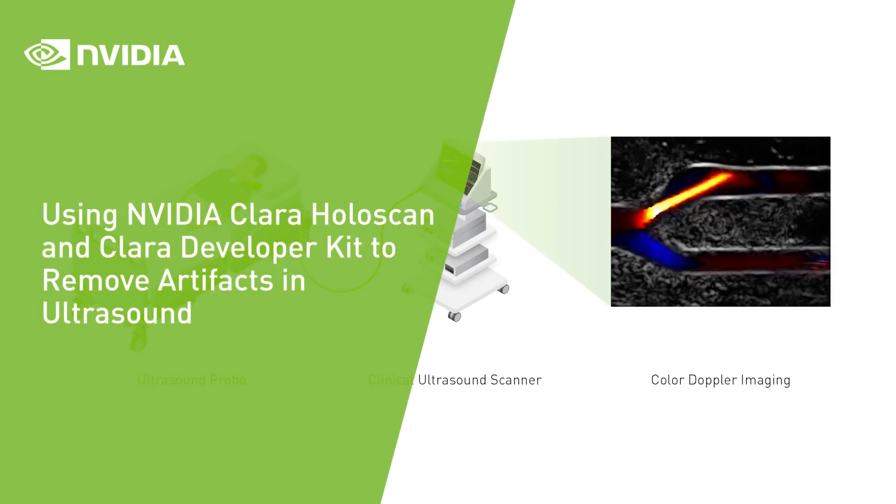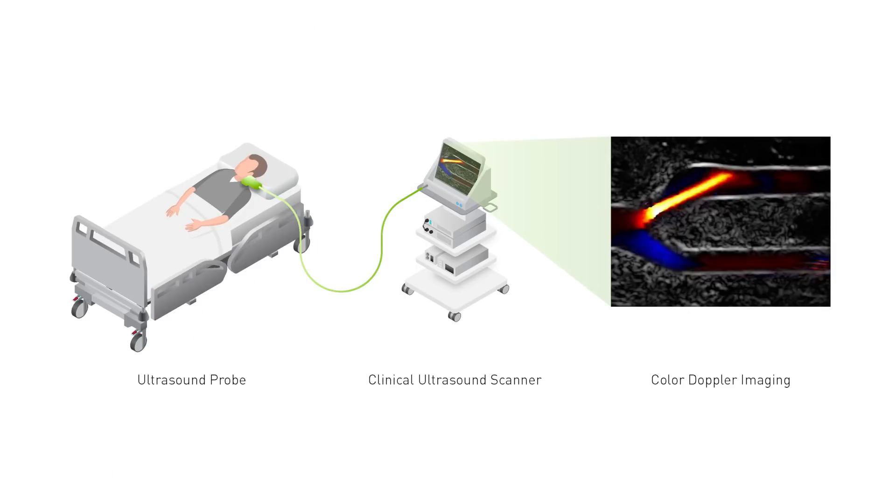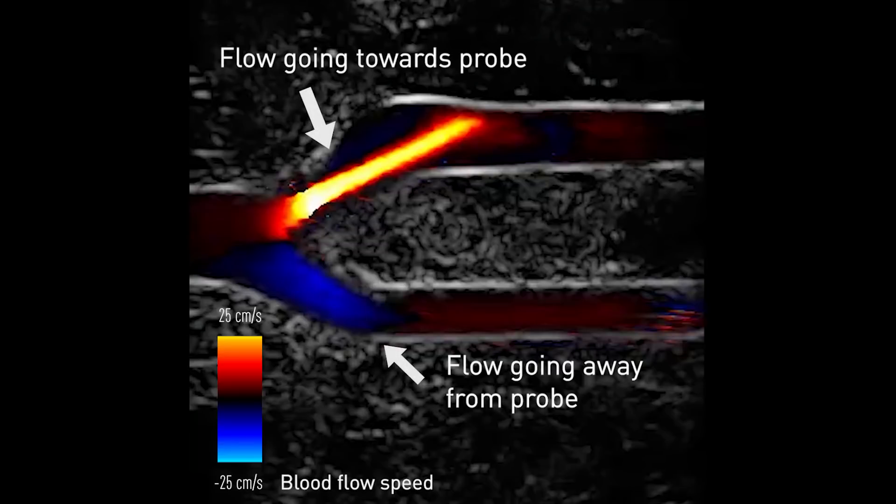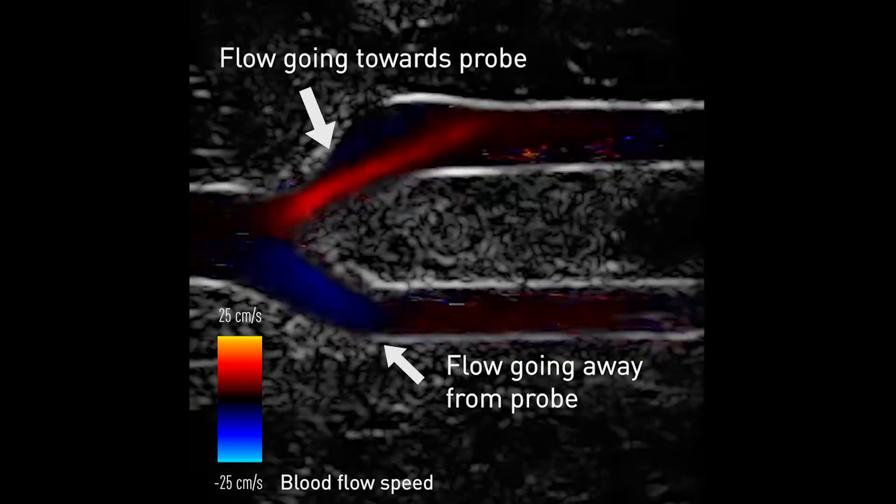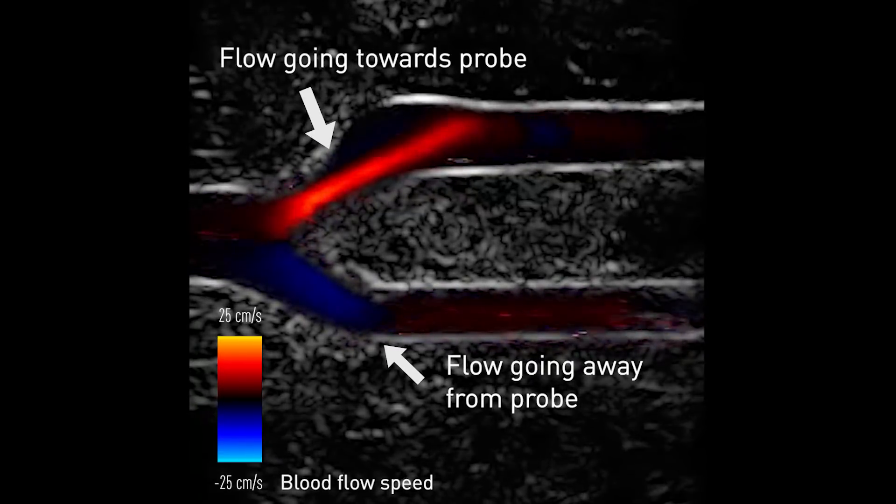Color Doppler Imaging or CDI is widely used in ultrasound imaging to visualize blood flow in arteries. This is a typical CDI sequence from a branching artery. Shades of red indicate blood flowing towards the ultrasound probe and shades of blue are used for blood flowing in the opposite direction.